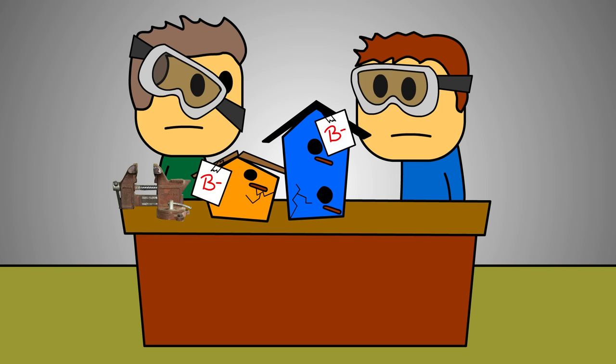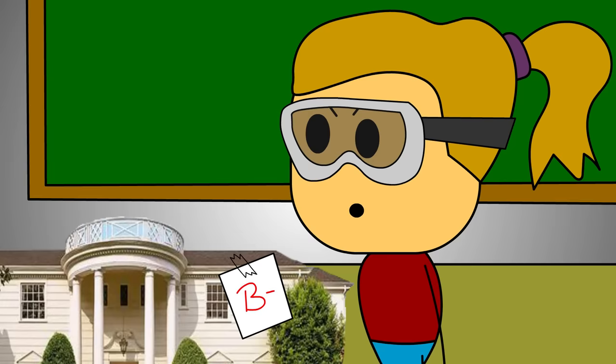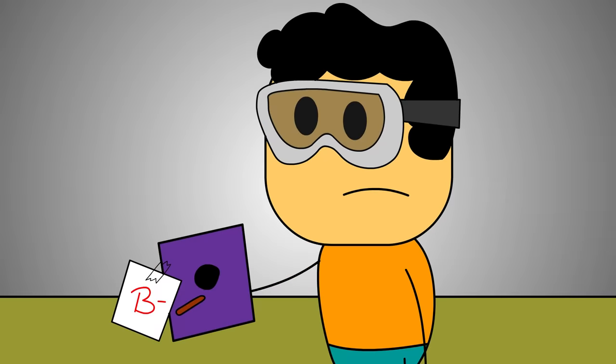So at the end of the project, we all get our B-minuses. Fucking Bob Vila chick is pissed as hell. God damn it, Mr. Schroeder, are you serious? Billy's birdhouse didn't even have a fucking roof on it.